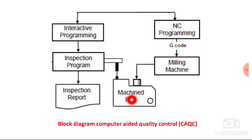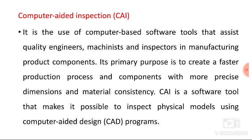You will also get an inspection report from the system. This is an example of computer-aided quality control where you are taking help of a computer for determining the quality of the product. Computer-aided inspection is the use of computer-based software tools that assist quality engineers, machinists, and inspectors in manufacturing product components. Its primary purpose is to create a faster production process and components with more precise dimensions and material consistency.